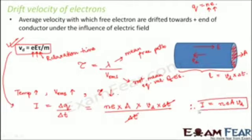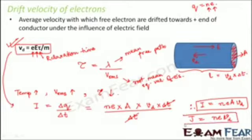Dividing by delta t, delta t cancels, and therefore current I equals neAvd. This is the relationship between current and drift velocity. You can also write it in terms of current density: current density J is current per unit area, so J equals nevd. This is the relationship between current density and drift velocity.